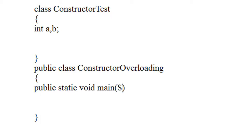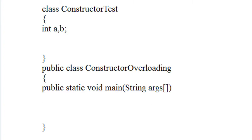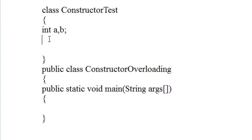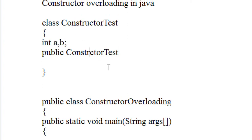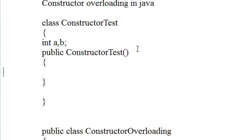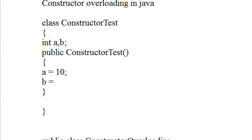Here is the main method. Now, I am going to create a constructor of this class. Here is the constructor — public ConstructorTest. Inside it, I assign two values for the variables: a is equal to 10 and b is equal to 20.